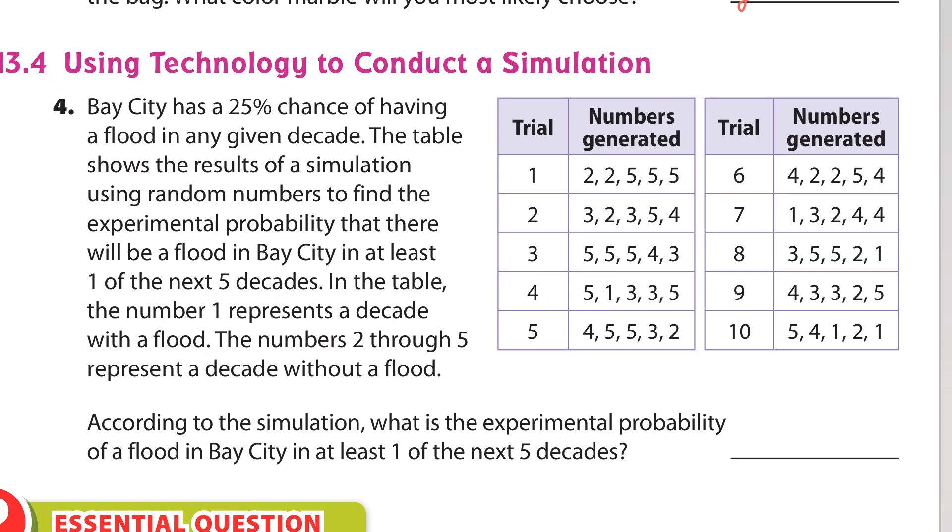Using technology to conduct a simulation. In 13.4, you use technology such as a random number generator like this to create a simulation. So here, Bay City has a 25% chance of having a flood in any given decade. The table shows the results of a simulation using random numbers to find the experimental probability that there will be a flood in Bay City in at least one of the next five decades.